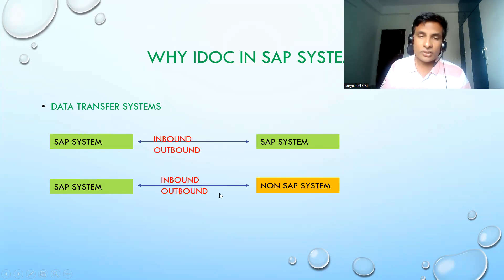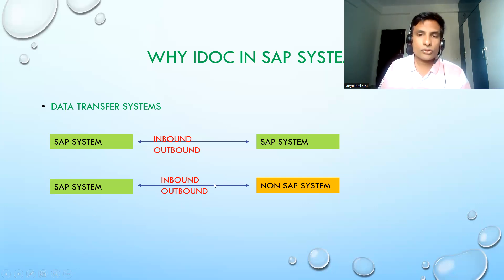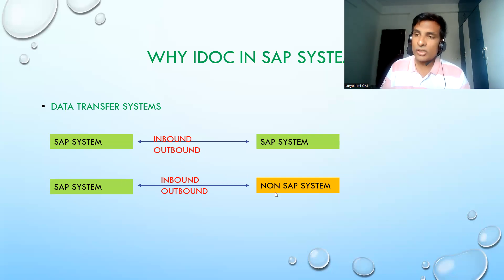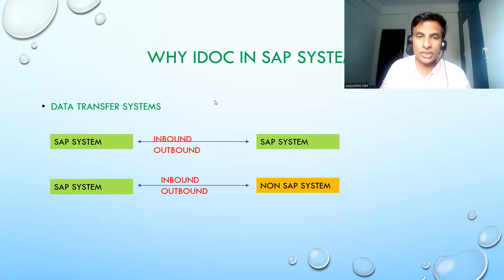Once an IDOC is created in the SAP system, the information needs to communicate via middleware. For SAP-to-SAP, communication can happen directly using ALE or IDOC technology. The IDOC format will be covered shortly. To summarize: IDOC is for data transfer between SAP-to-SAP, SAP-to-non-SAP, or non-SAP-to-SAP. Outbound means pushing data; inbound means receiving information.